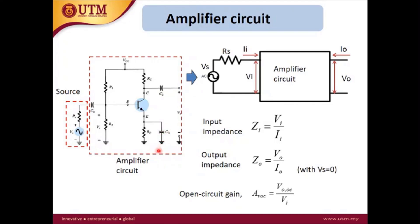We will analyze how good the amplifier circuit is at amplifying the signal — specifically in terms of the amplification process. Ideally we want to have a very large gain, meaning the output voltage signal must be much higher than the input signal. We expect the amplifier to have a satisfactory value of gain.